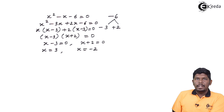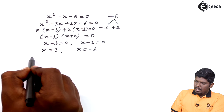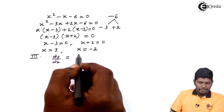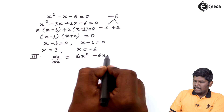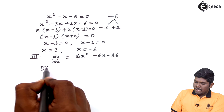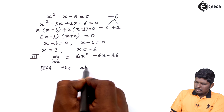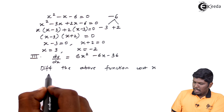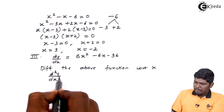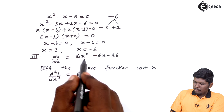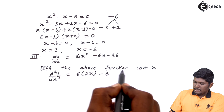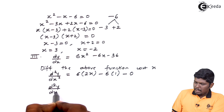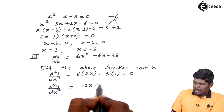The next step is to find the second order derivative. In step number 3, we have dy/dx = 6x² - 6x - 36. Differentiating again with respect to x, d²y/dx² = 12x - 6.